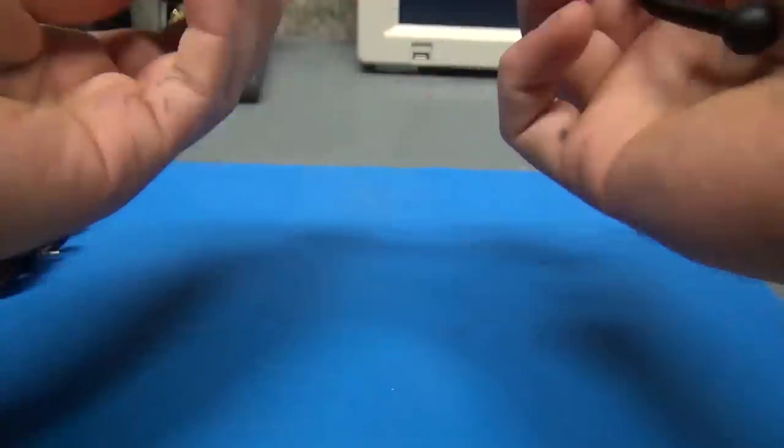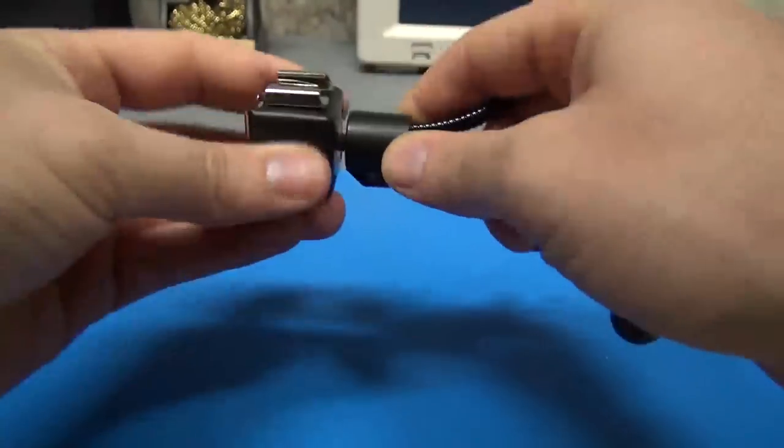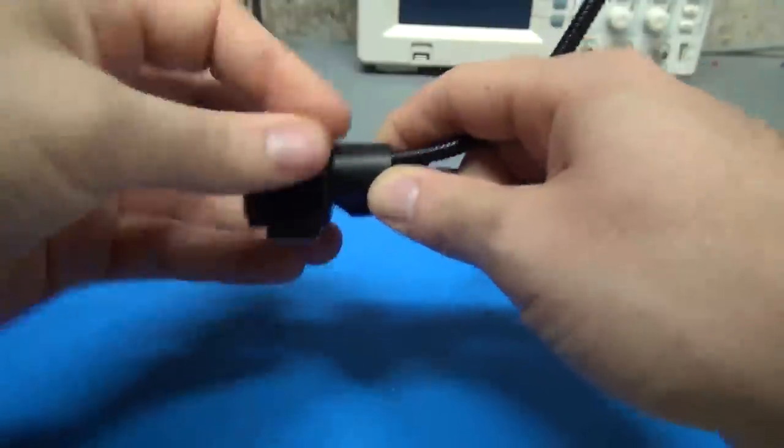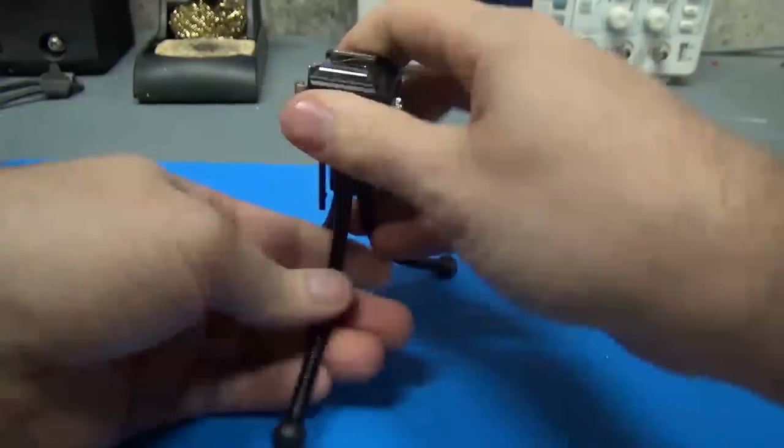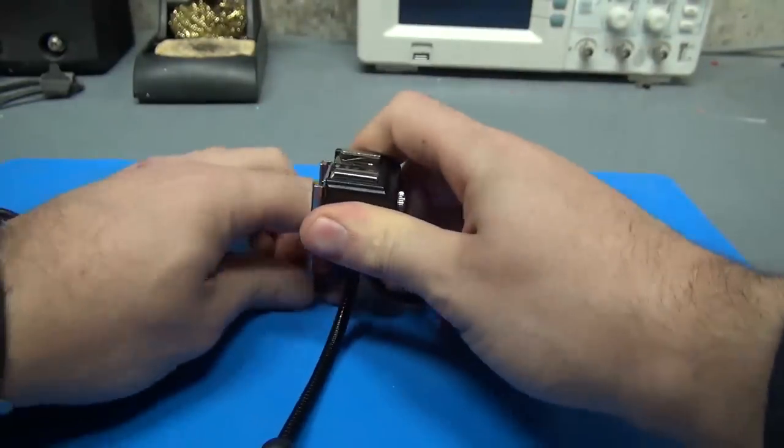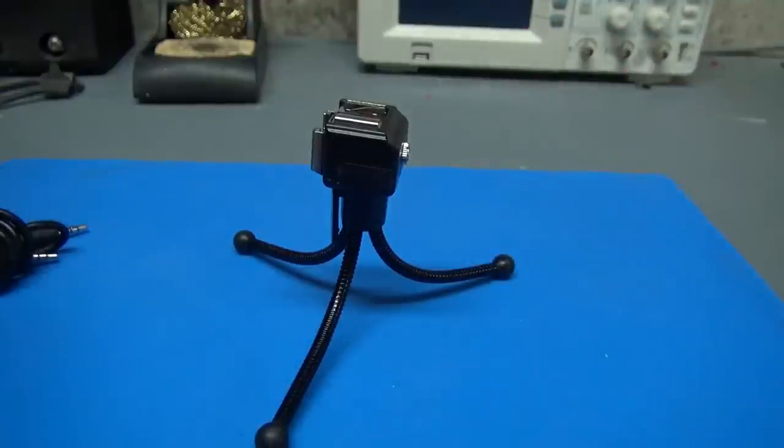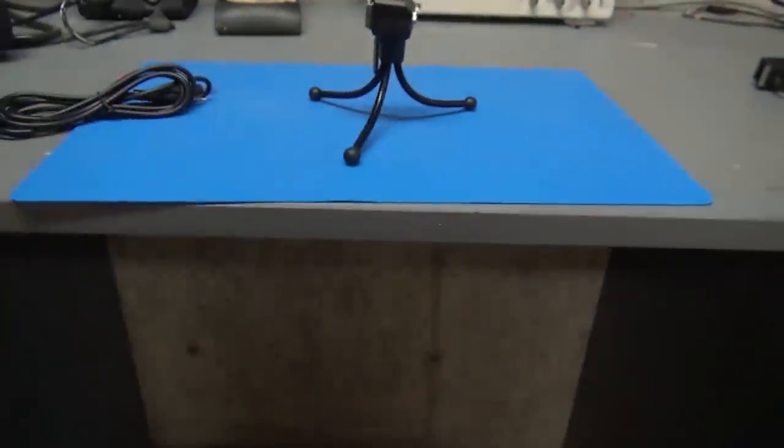So all you have to do is you take this hot shoe flash connector and you just screw it on. It's got a standard quarter inch tripod thread on the bottom. And let me zoom out a little bit by moving the camera.